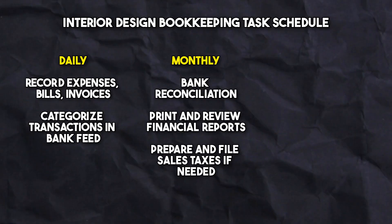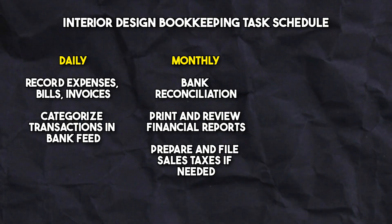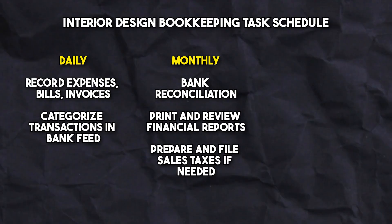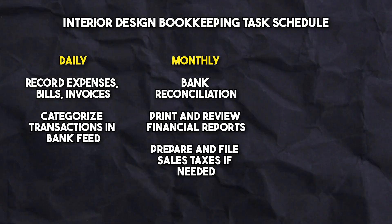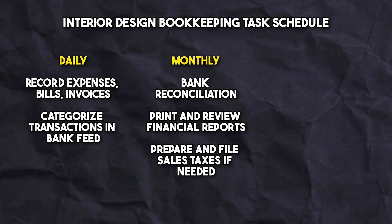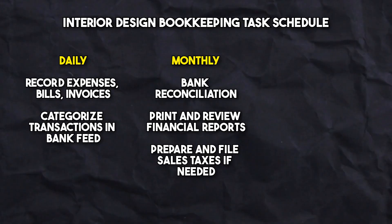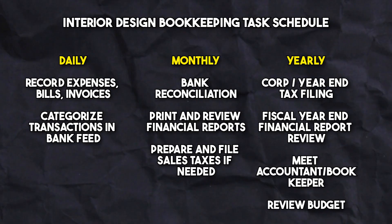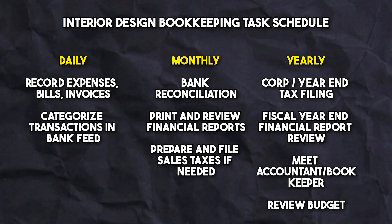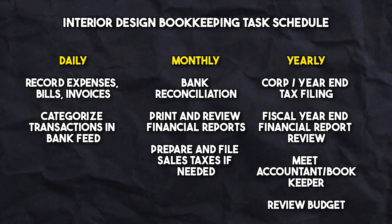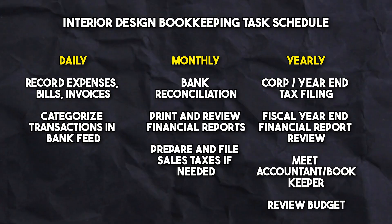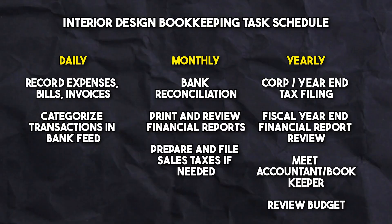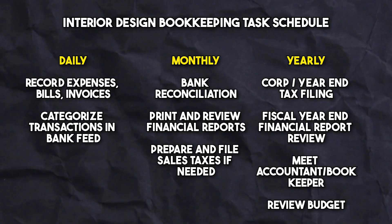On a monthly basis, you want to reconcile your bank and credit card statements with the records you categorized daily, making sure each transaction matches your bank statements. This is also a good time to print your financial reports and review them, and to prepare and file sales taxes to keep compliance in check. On an annual basis, you want to wrap up your year's financial activities, which includes tax filing, reviewing your overall financial performance, meeting with an accountant, reviewing your budget against long-term growth strategies, and updating any financial tools or software.